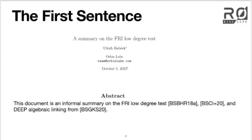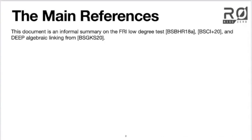We're going to look at the paper more or less sentence by sentence starting from the beginning, and I'm going to try to unpack the context and references as much as I can as we go. The first sentence says this document is an informal summary on the FRI low-degree test and deep algebraic linking, and it lists some references. I want to talk a little bit at the beginning about what these references are.